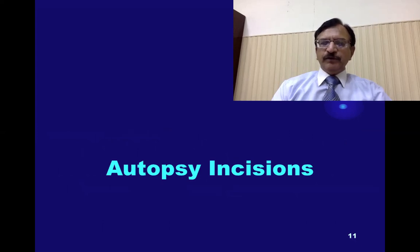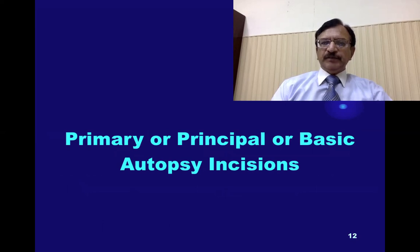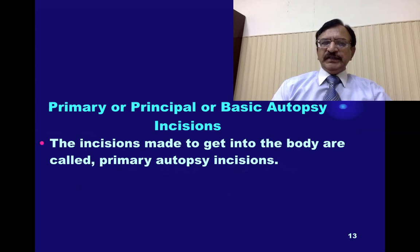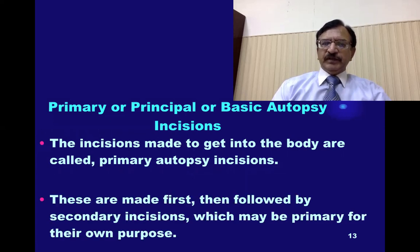Now talking about the autopsy incisions. There are primary, principal, or basic autopsy incisions. These incisions are to get into the body and are called primary autopsy incisions. They are made first, then followed by secondary incisions, which may be primary for their own purpose.